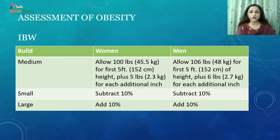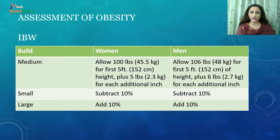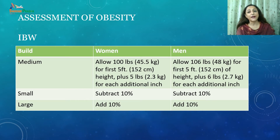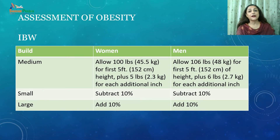Let us learn about the assessment of overweight and obesity. Visual inspection gives a subjective but fairly accurate estimate of degree of overweight or obesity. When we talk about body weight, we have reference tables indicating average weights by height and age, and tables for desirable weight for height. If a person weighs 10% more than the standard weight, they are considered overweight; if 20% higher than ideal body weight, that person is called obese. This is one table which can be helpful in calculating ideal body weight.